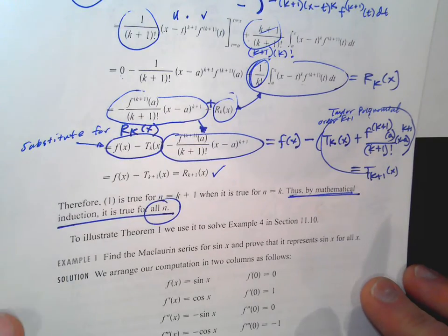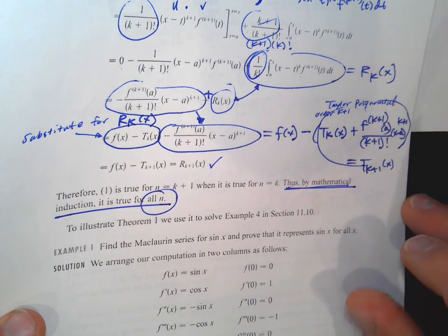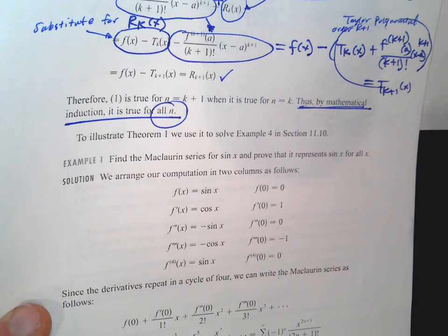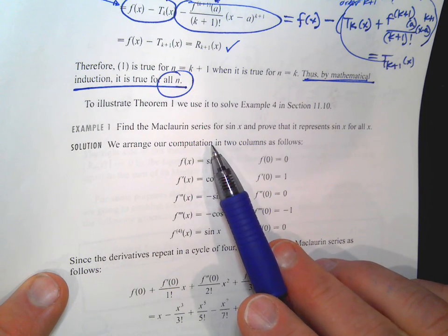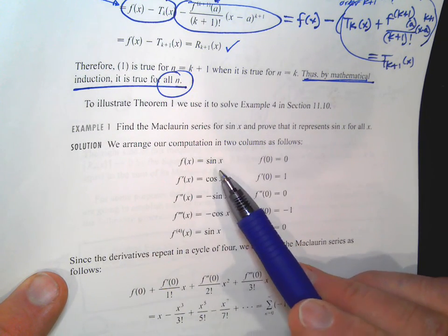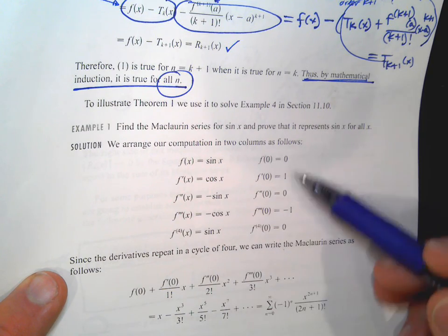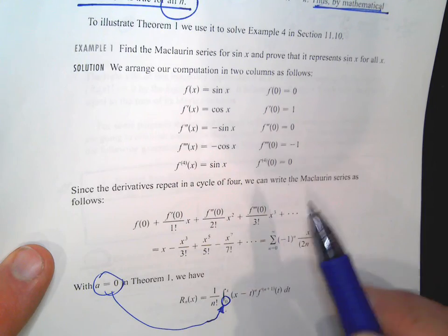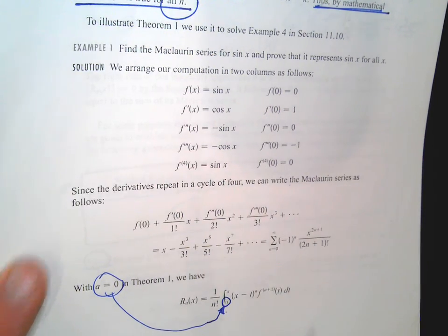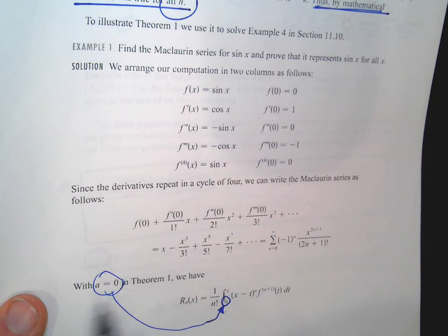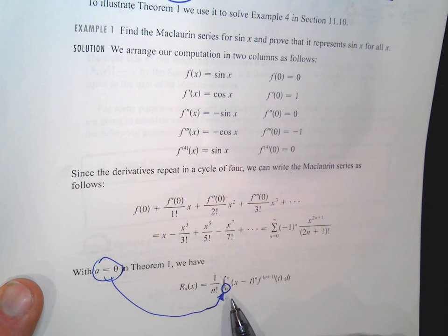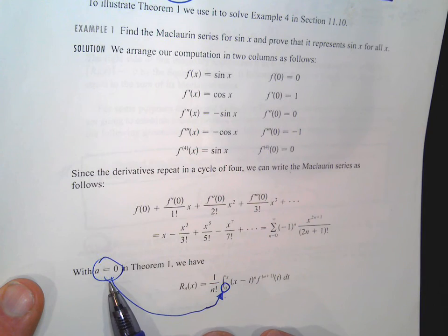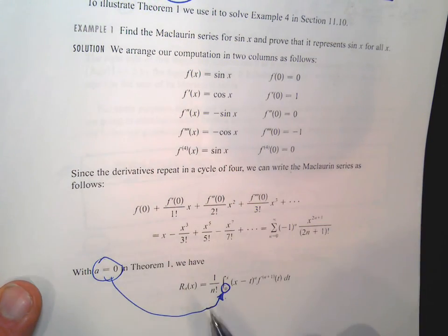Now onto another part. We're going to use an example — the function sine x. We're going to take its derivatives, like we're building the Taylor polynomial. This will show how it works. Here's the remainder theorem that we just proved, in general. We're going to do it with the center at a equals 0 — that's where that 0 comes from.